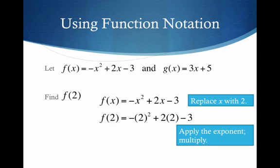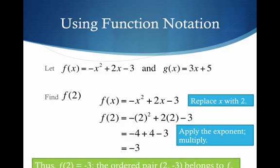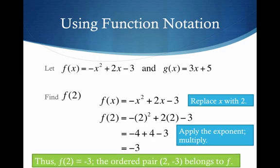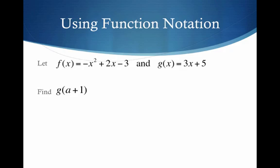And so I'm telling you, apply the exponent, then multiply. And so I'm getting negative 4 plus 4 minus 3, or simply negative 3. Thus, when I plug in 2, or I can say f of 2, I get negative 3, which gives me the ordered pair 2 comma negative 3.